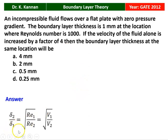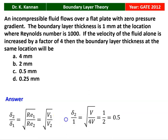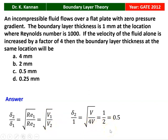So, delta2 by delta1 equals the square root of Reynolds number 1 divided by Reynolds number 2, which is the square root of V1 by V2, considering other properties are constant and only velocity changes. So delta2, the unknown boundary layer thickness, with delta1 equal to 1 mm, equals the square root of V divided by 4V, which is 1 by 2, which is 0.5. The answer is option C: 0.5 mm.